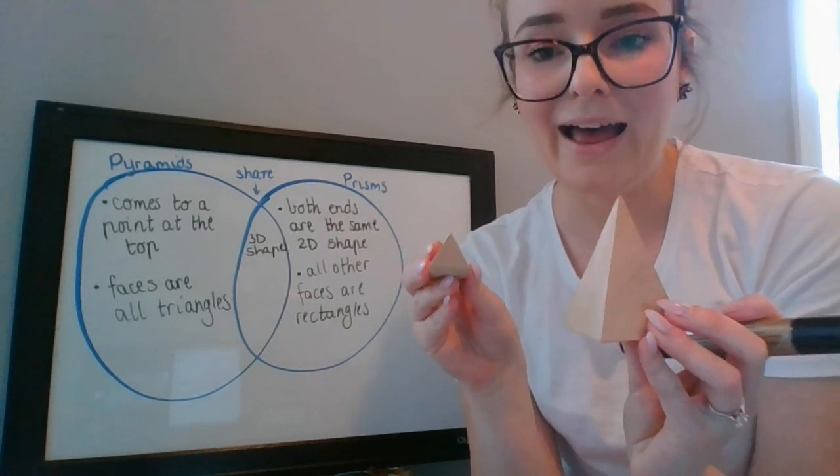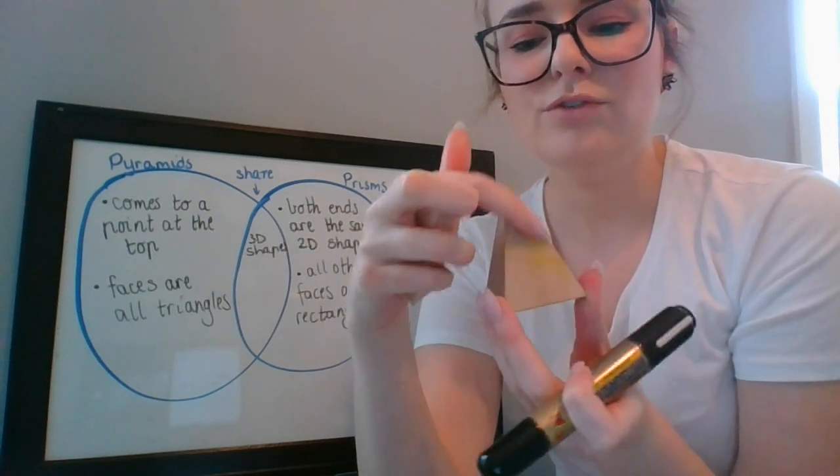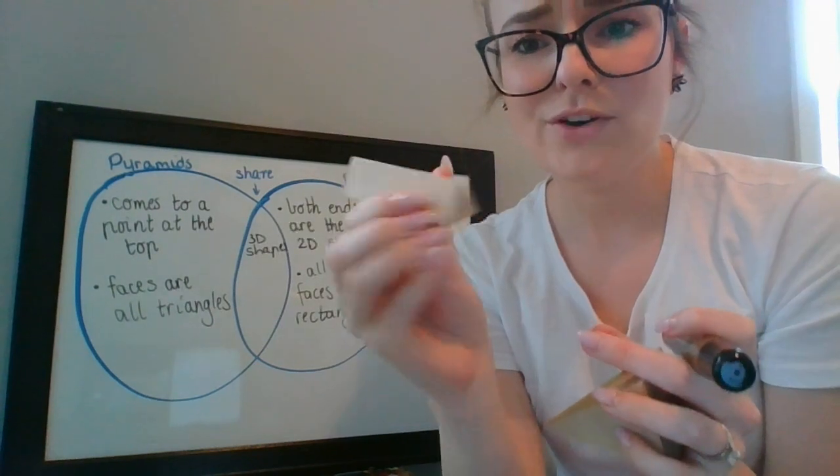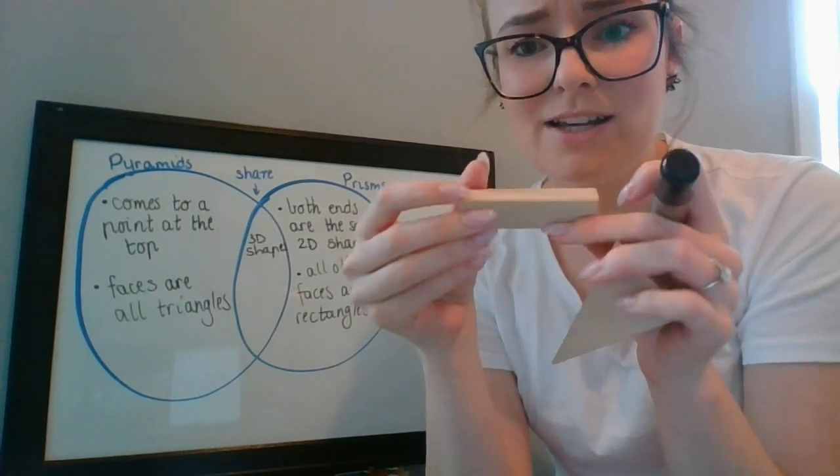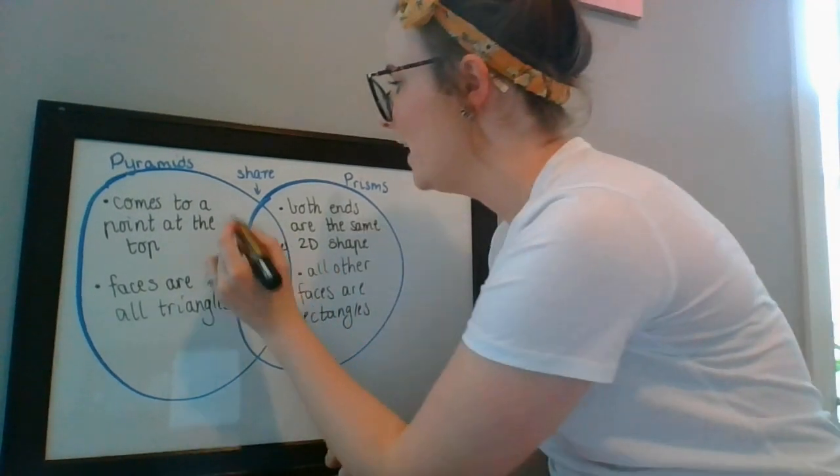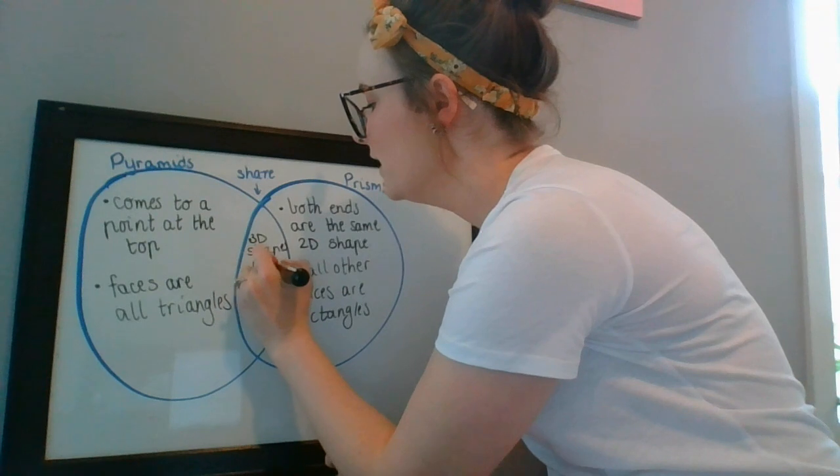I'll give you one more hint and then you're going to have to think about the rest of them yourself. They all have faces. Okay, so I can see that it's got beautiful faces on the side of my pyramid. And my prism also has faces. So is that something that they share? Yeah. So I can write that they both have faces.